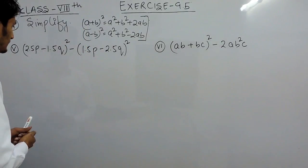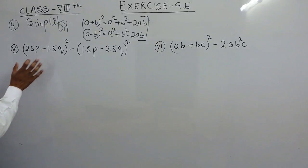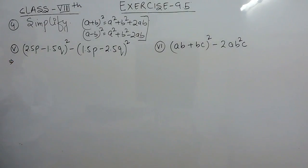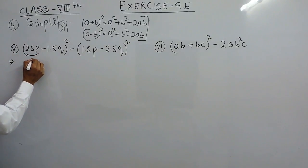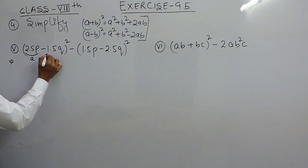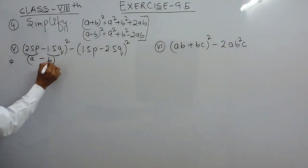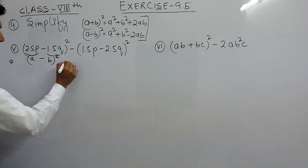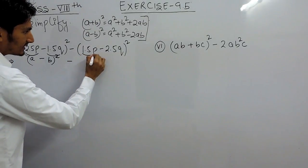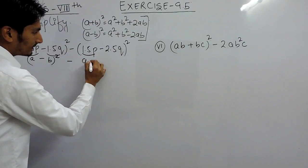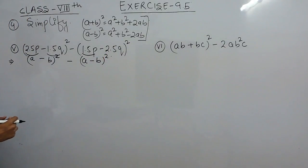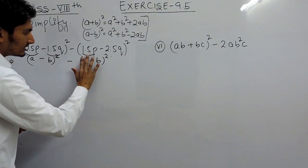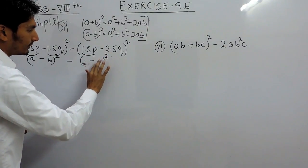Let's solve the first part. The minus sign means if I consider this complete term as 'a' and this complete term as 'b', so this is actually a minus b whole square. Similarly, if I consider this complete value as 'a' and this complete value as 'b', again this is a minus b whole square — or you can consider these two as different variables x and y.